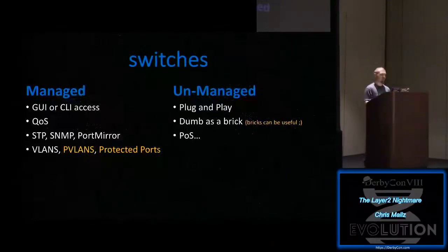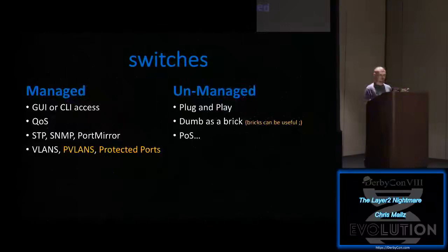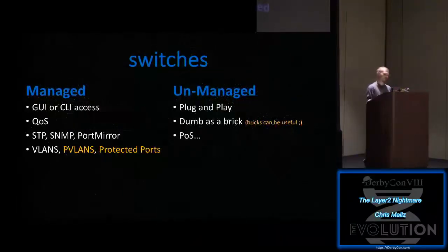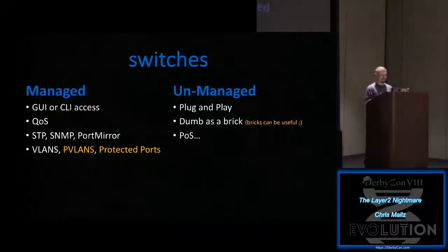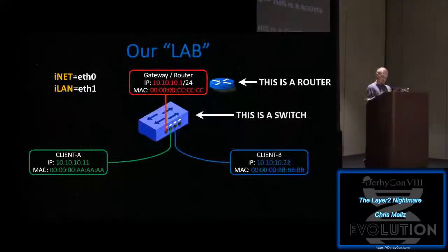Switches come in two flavors: managed and unmanaged. Unmanaged switches are totally dumb — they're basically bricks. They let anything through and handle layer two addressing for you. With a managed switch you can do a lot more: protected ports, VLANs, private VLANs, QoS, and a bunch of other features. If you go out and buy one, make sure you get a managed switch.